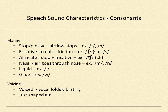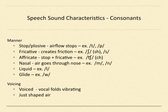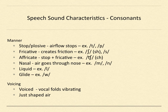Now let's talk about manner. We've talked about place — where the sound is being produced and what articulators come together. Then we talk about how the airflow is flowing. A stop or a plosive — those terms are used interchangeably. When we talk about stops and plosives, the air is coming out of the lungs, up through the trachea, and it's being stopped behind two articulators, and then suddenly released.